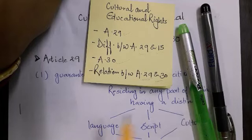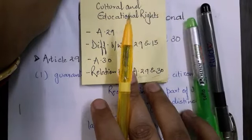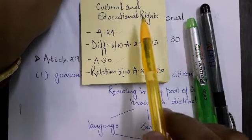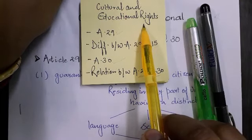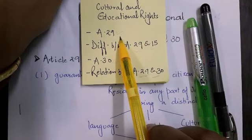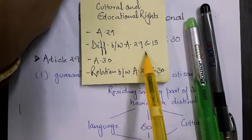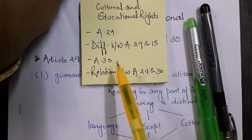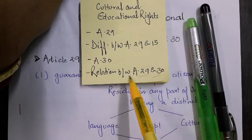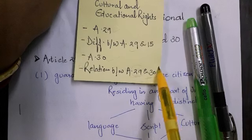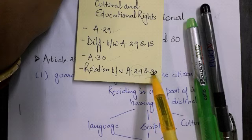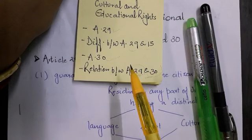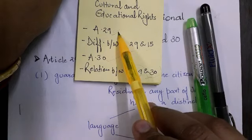A very good afternoon to all of you. Today in this video lecture we are going to talk about cultural and educational rights, which is next in line of the fundamental rights. We will discuss Article 29, the difference between Article 29 and Article 15, Article 30, and the interrelationship between Article 29 and Article 30. So let's begin with the illustration of Article 29 first.